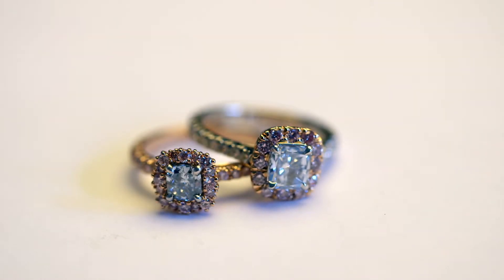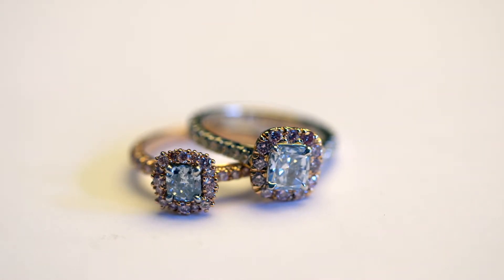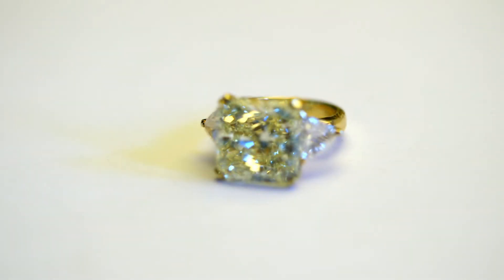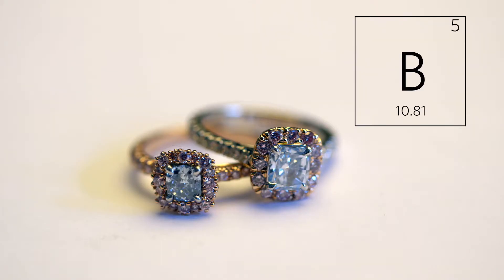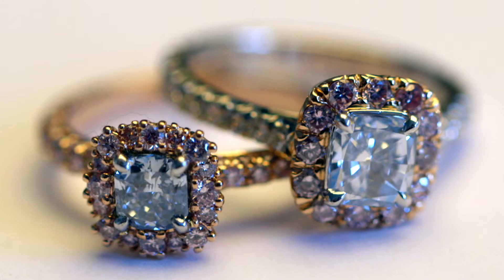Moving on through the color spectrum, we have a more rare diamond: the blue diamond. What causes the color in a blue diamond is an impurity called boron. Unlike the yellow diamond where the color is caused by impurities of nitrogen, boron is a much rarer element to find in a diamond.